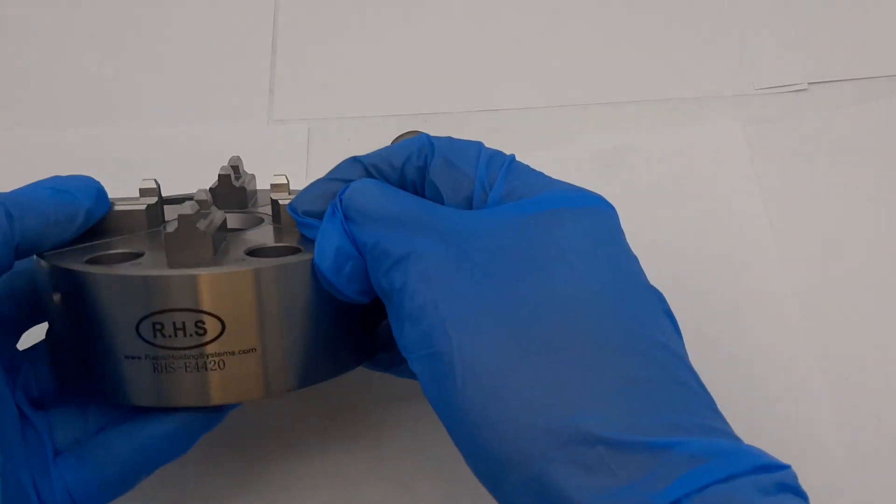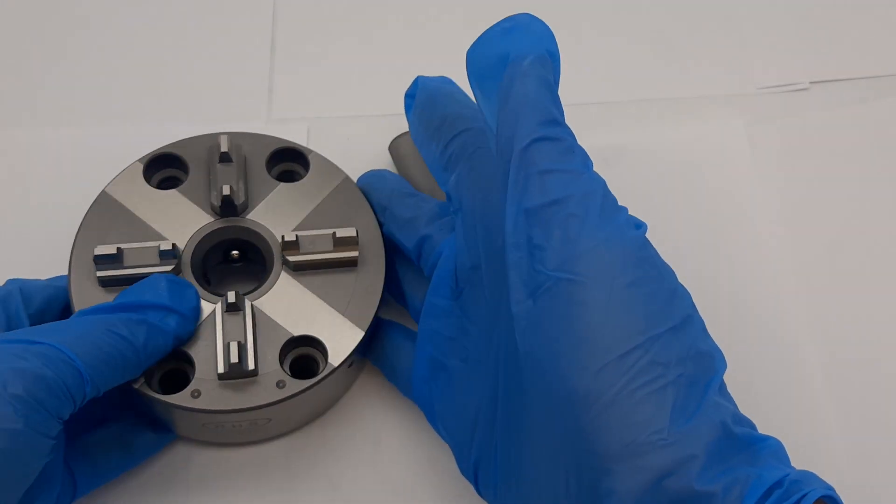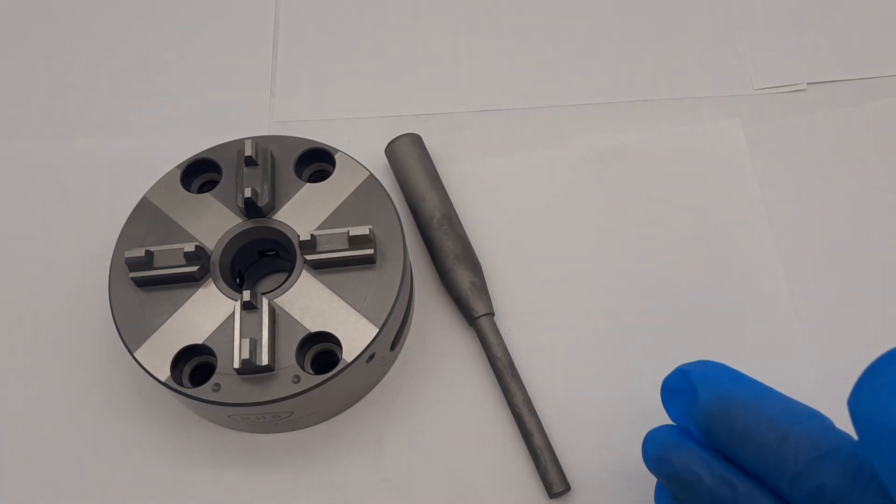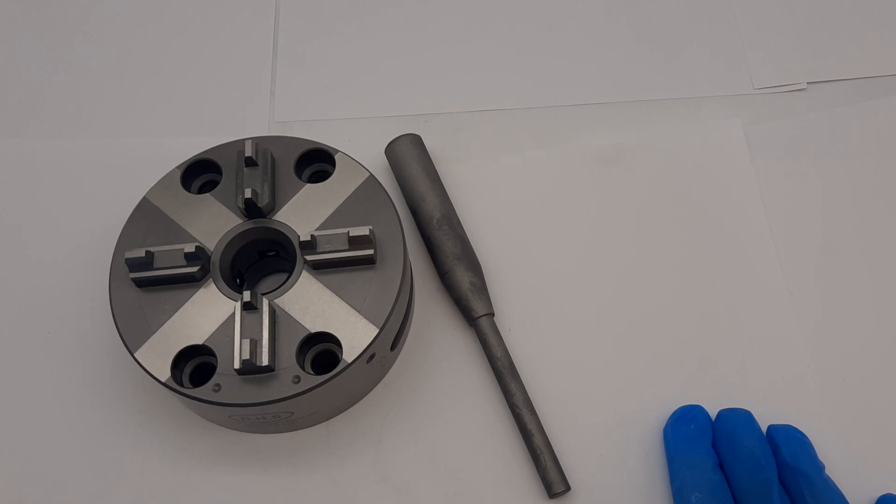For this part number RHS-E4420, search out this part number on our website www.rapidholdingsystems.com and see the detailed specifications on the website. If you have further questions, reach out to us. We will be glad to help you.